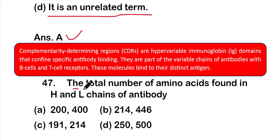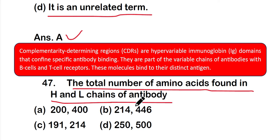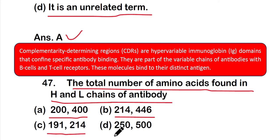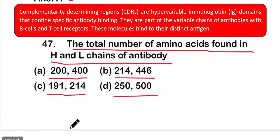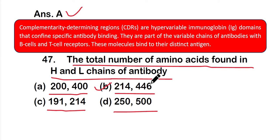Question 47: The total number of amino acids found in heavy (H) and light (L) chains of antibody is option A 200 and 400, option B 214 and 446, option C 191 and 214, or option D 250 and 500. The right answer is option B — 214 amino acids in the light chain and 446 amino acids in the heavy chain.